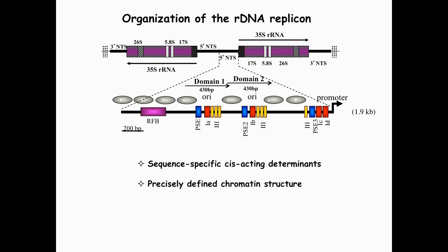Before I get into the details, I need to give a little more background about the major workhorse we use: the rDNA mini-chromosome. The rDNA is a 21-kilobase mini-chromosome, and all regulatory sequences controlling DNA replication reside within the 5' non-transcribed spacer. It's a palindromic mini-chromosome with two copies of a 10.3 kb segment in an inverted orientation. When you zoom into this region, you see a very precisely defined chromatin structure with three nucleosome-free regions.